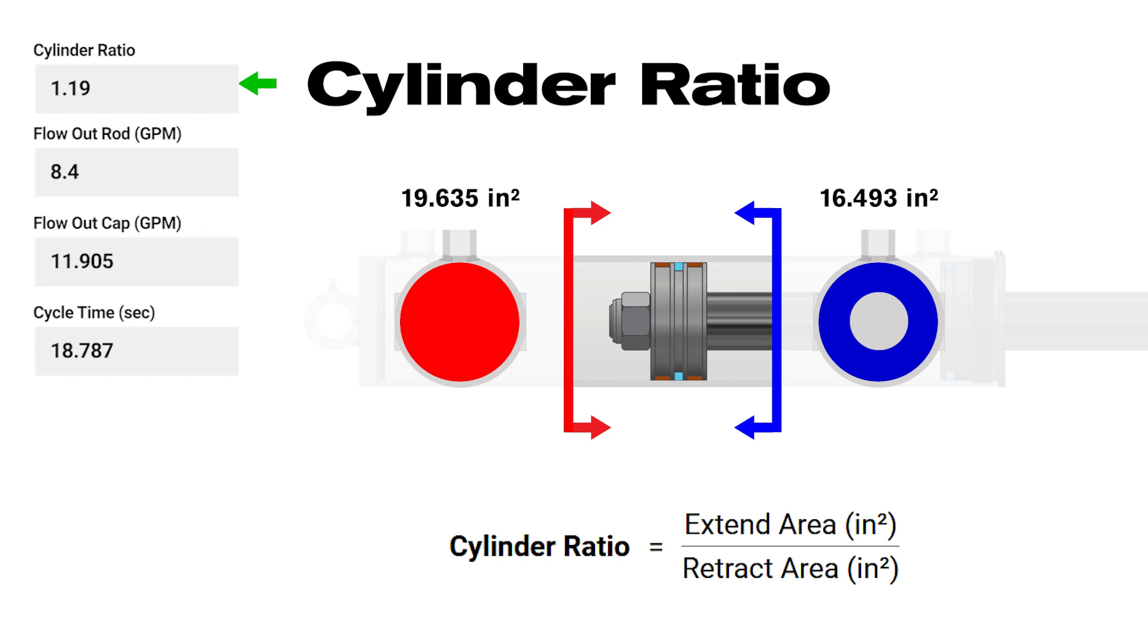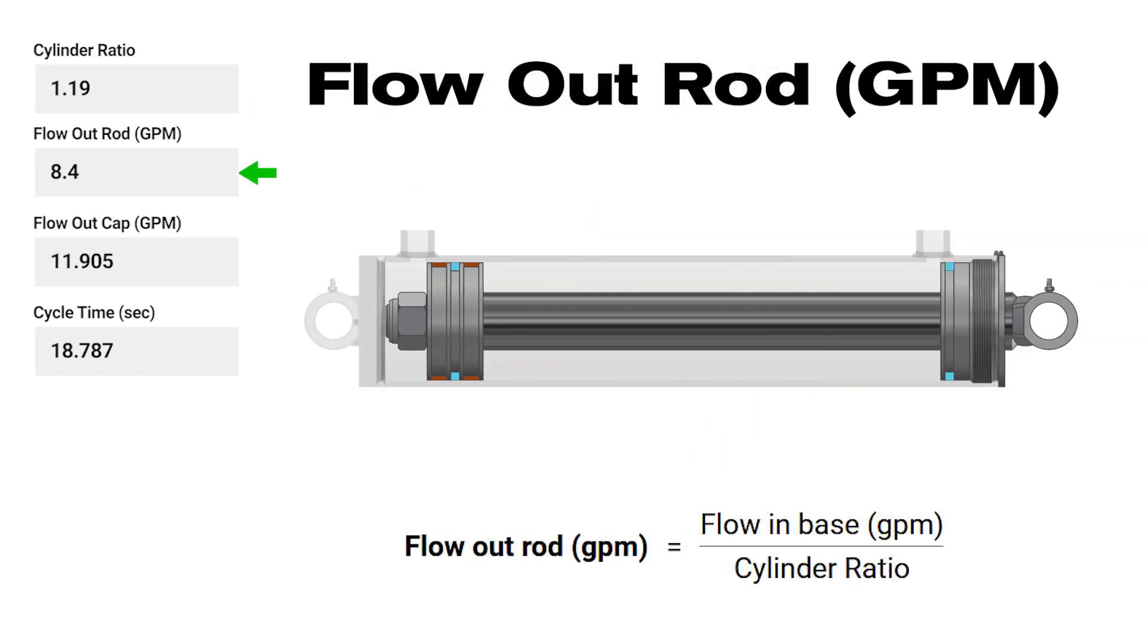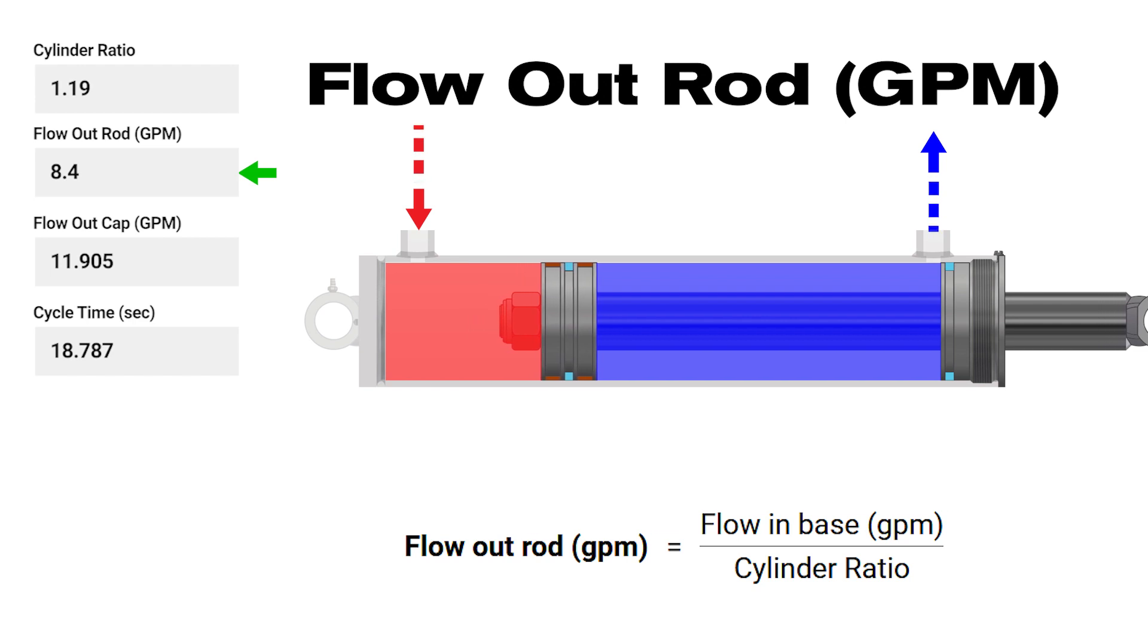Flow out values, measured in gallons per minute. Because cylinders do not have equal areas.